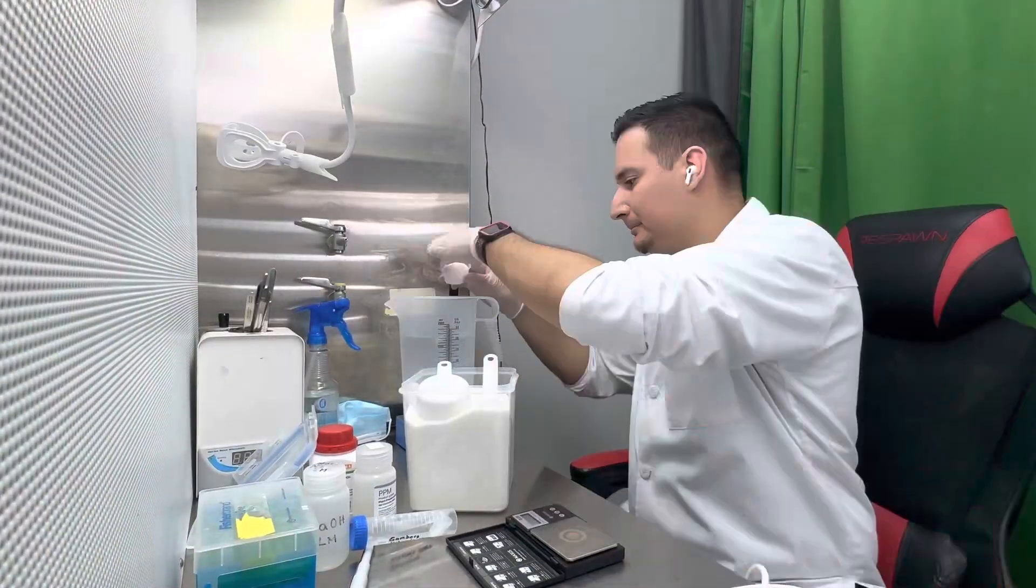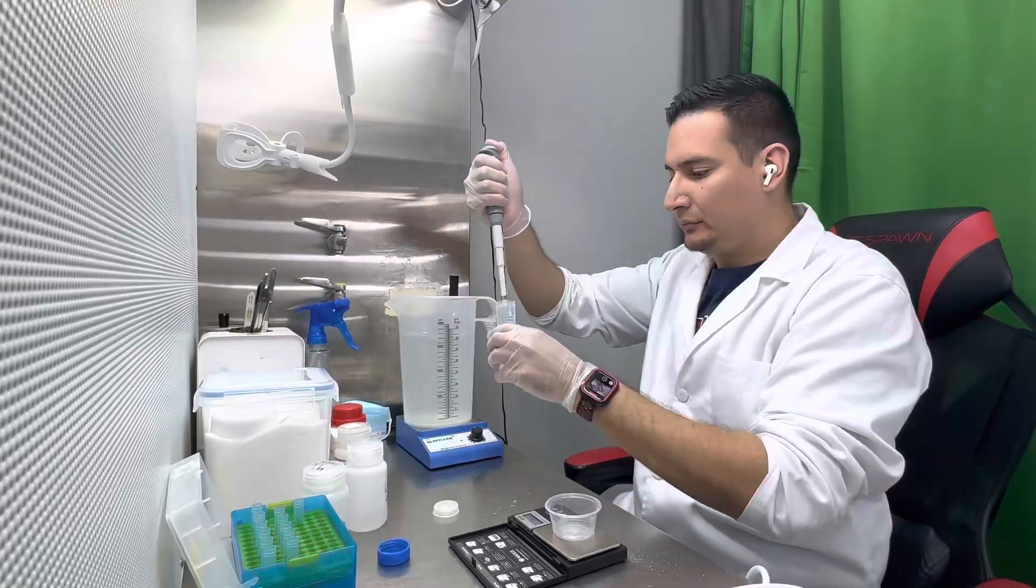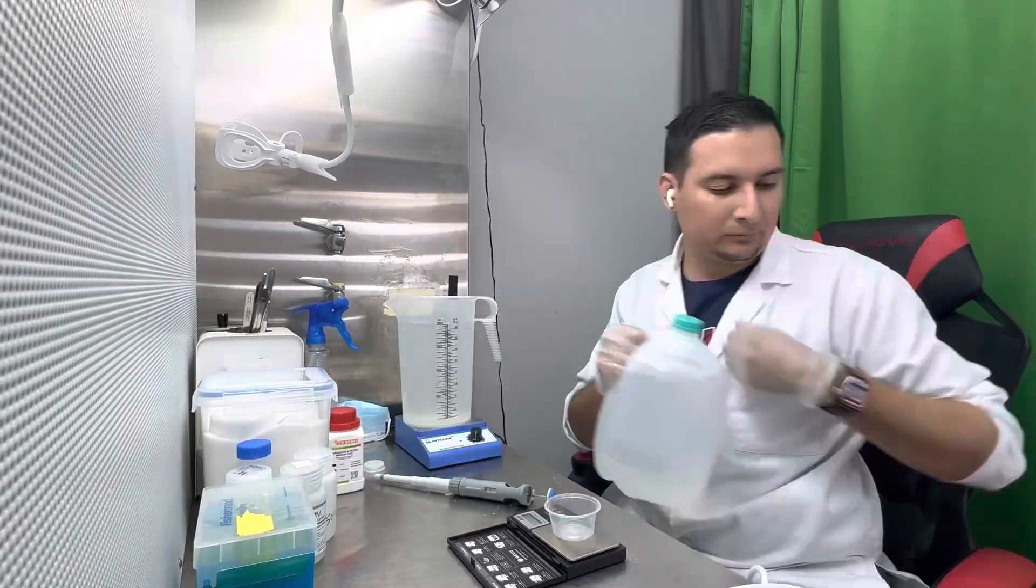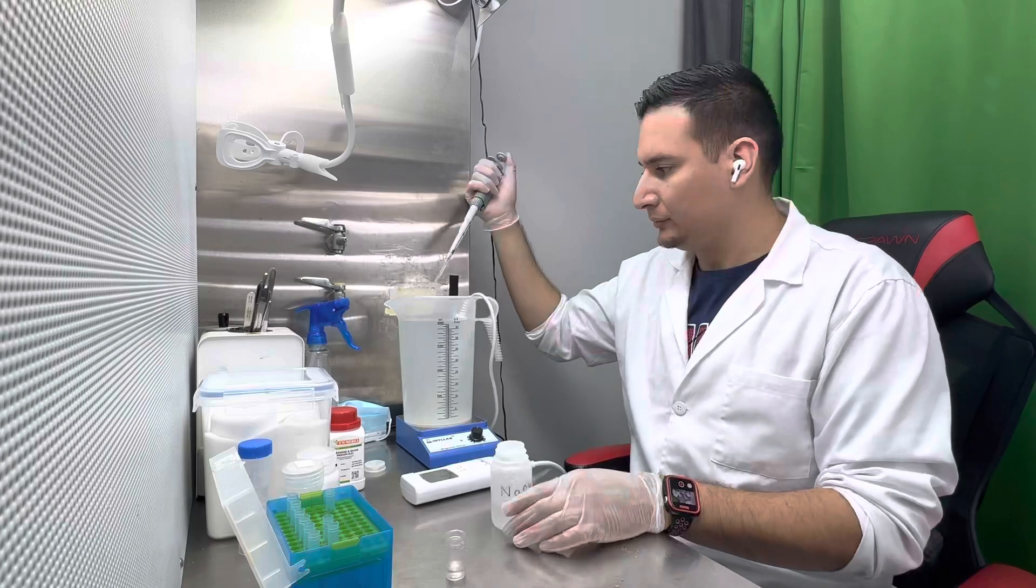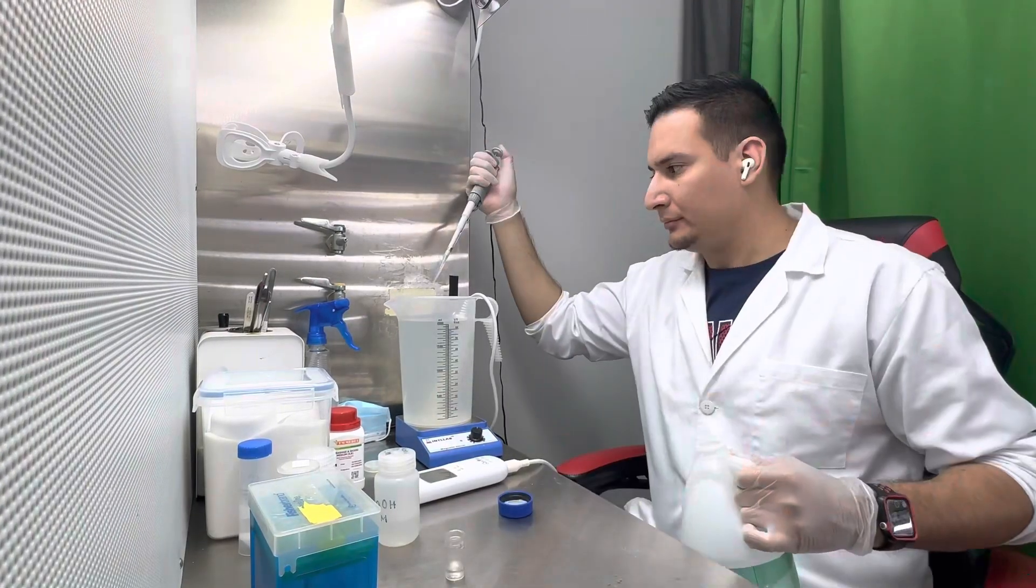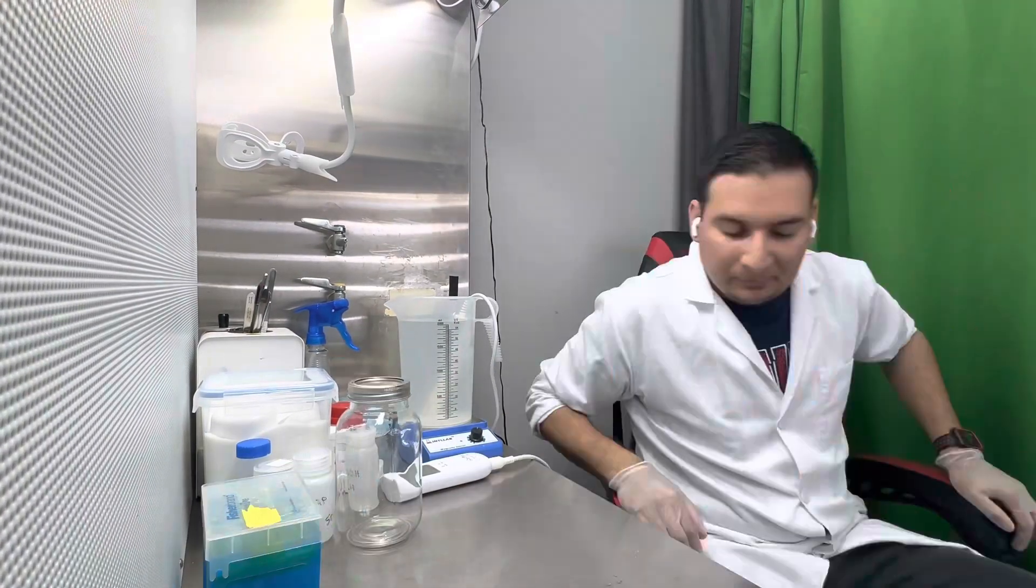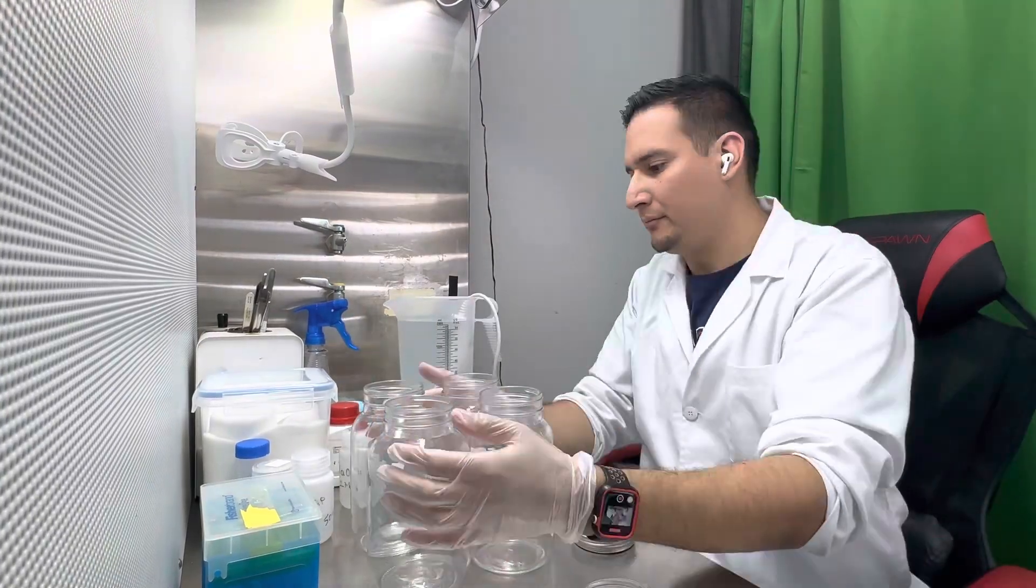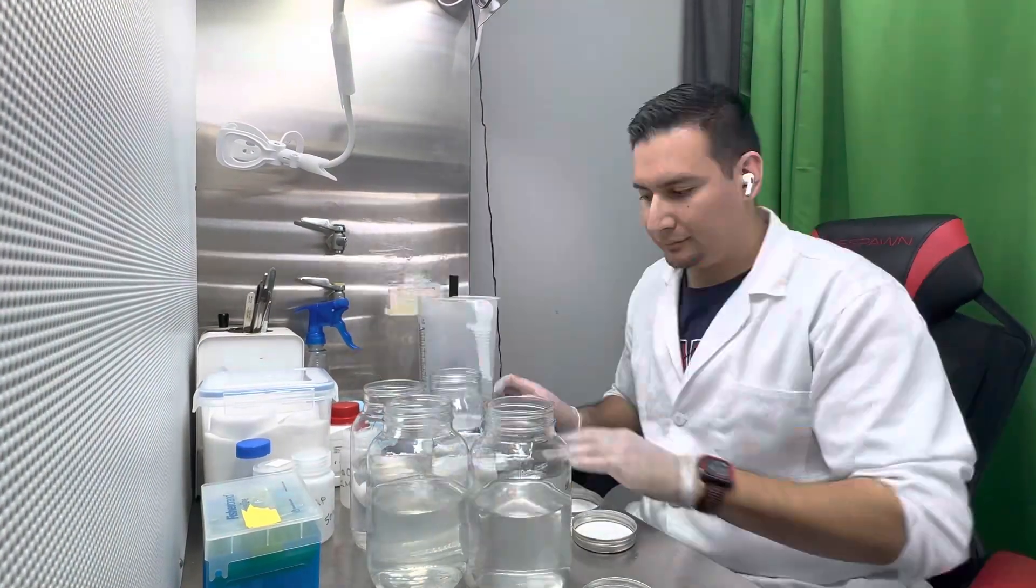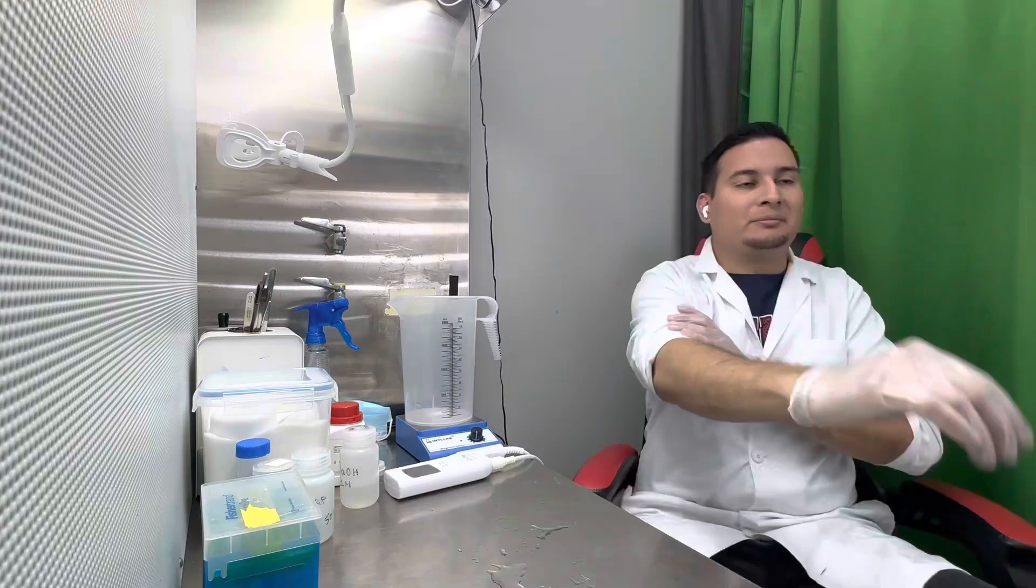Then I have to make media. To make media is very simple—I have other videos on the YouTube channel. I add my MS media, sugar, plant growth regulators, PPM, adjust the pH, and I don't have to use an agar agent as this is a liquid media.